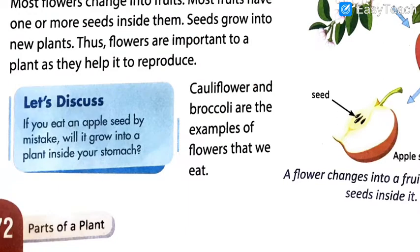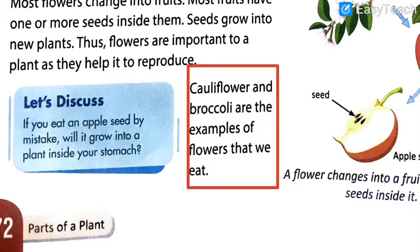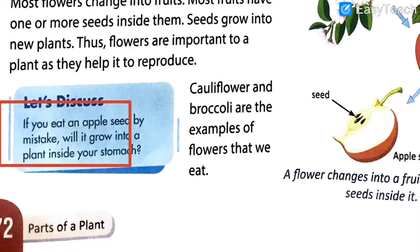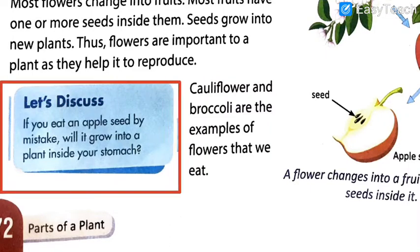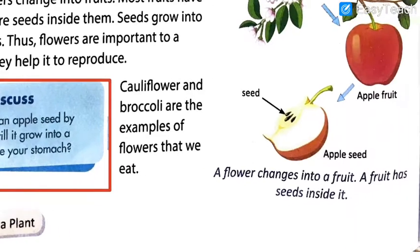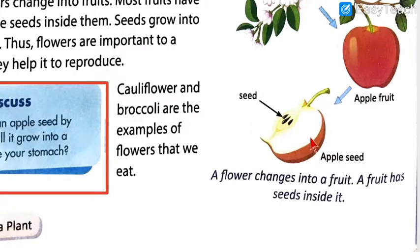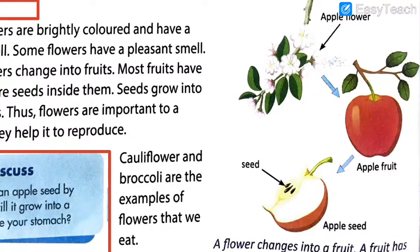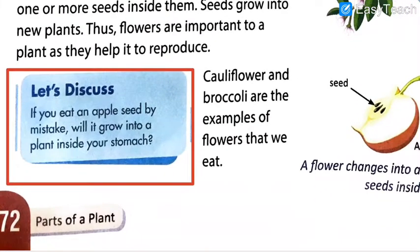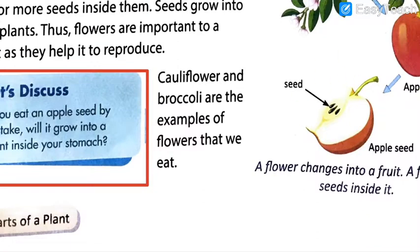Cauliflower and broccoli are examples of the flowers that we eat. Now here is a humorous point — if you eat an apple seed by mistake, will it grow into a plant inside your stomach? Is it possible that when you are eating an apple and by mistake eat the seeds, will this kind of flower and tree grow inside your stomach? No, don't worry, it will not happen. Have you ever seen a plant or tree grow inside the stomach of a human being? It never happens. Our system is made such that it will never happen. Anyway, you don't have to eat the seeds — you need to remove the seeds and eat.